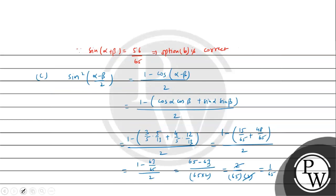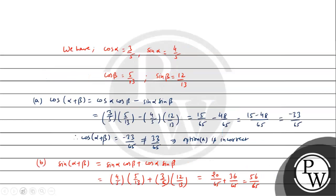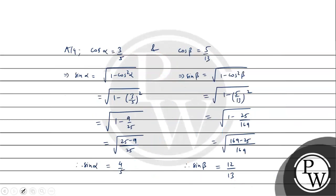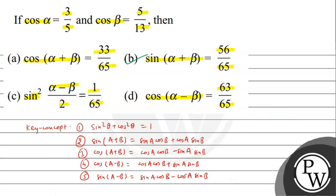So option B is correct, option C is correct, and option D is correct, but option A is incorrect. Hence, options B, C, and D are your final answers. I hope you understood it well. Best of luck.